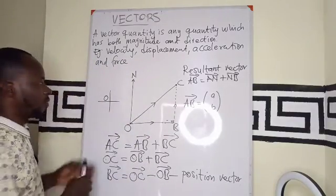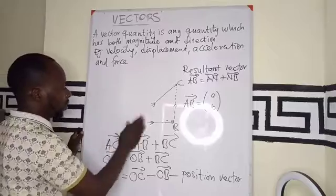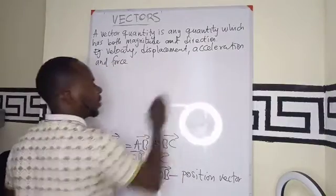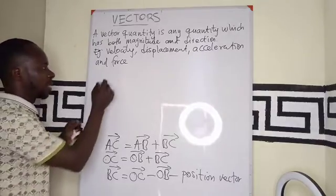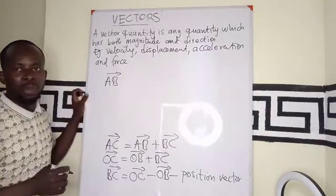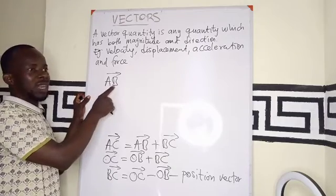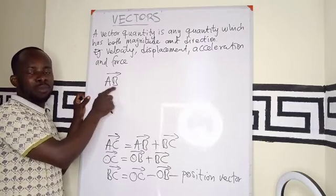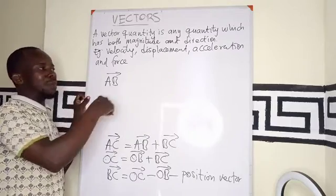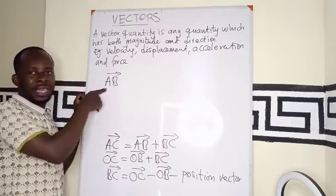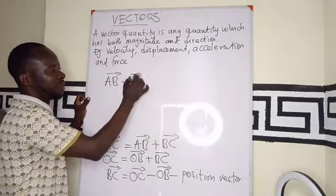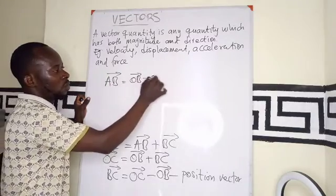So for example, if I ask to express the vector AB in terms of a position vector, since we are saying that it is the distance from the end point, the distance of the end point from the origin minus the distance of the beginning, the initial point. So this is going to be OB as a vector minus OA.